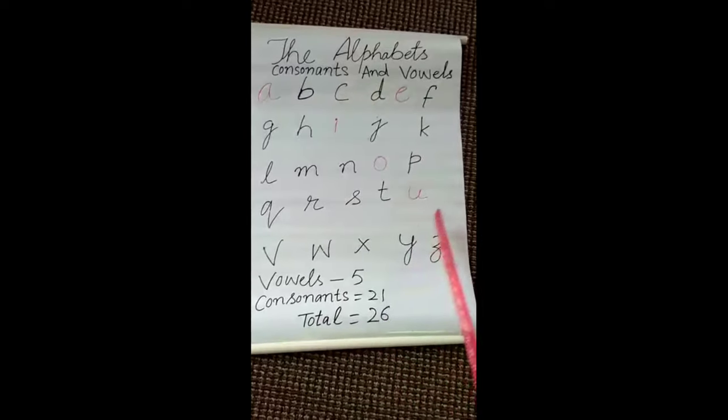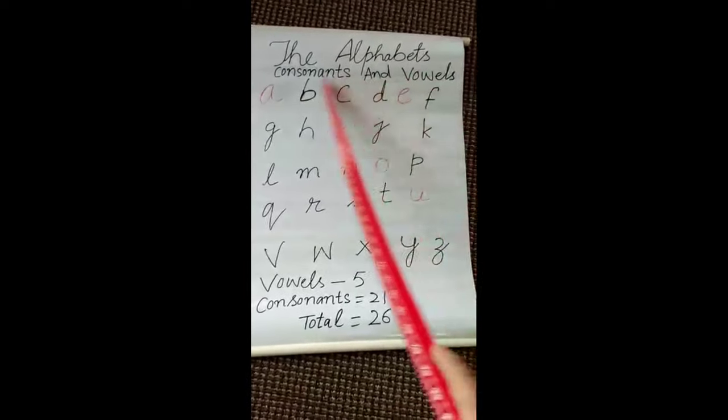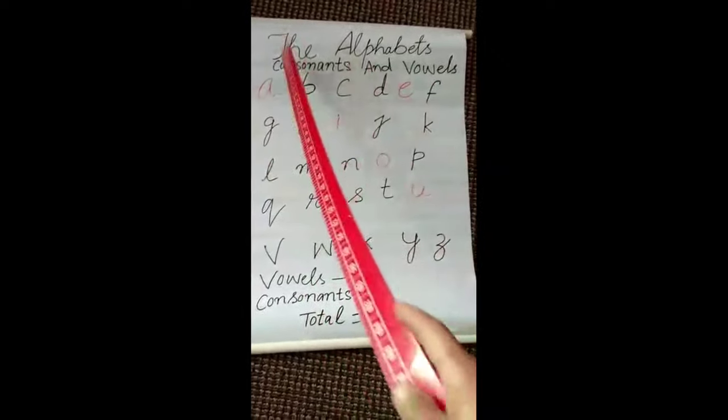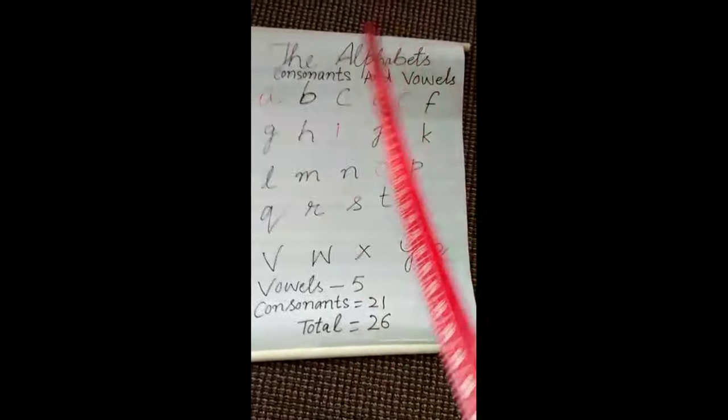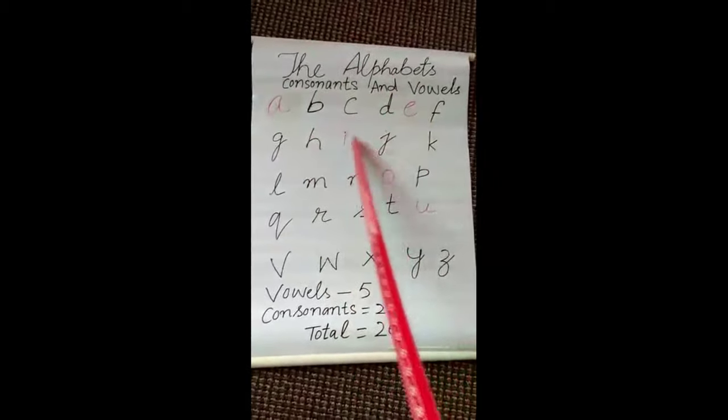So there are 26 letters in the English alphabet. The red colored letters are called vowels.